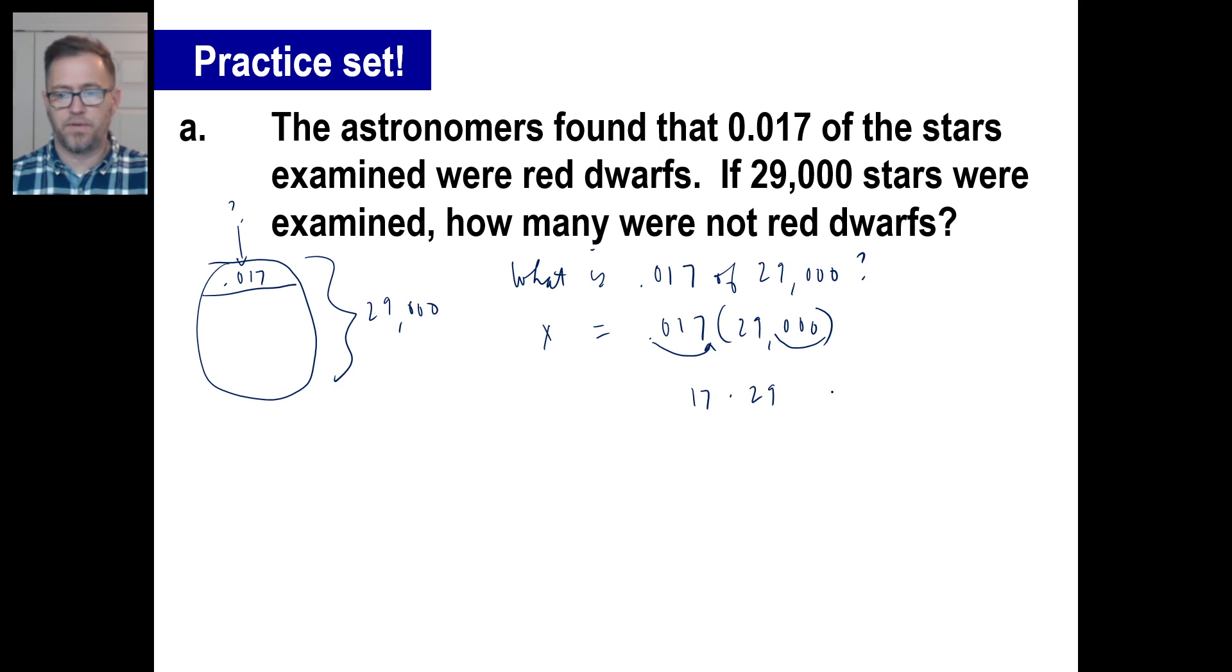All right, so the answer we have here is, if you know, of course, your 29s tables, you remember that 29 times 17 is 493. And there we go. There's your answer. Pause it and try B.